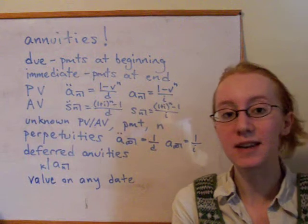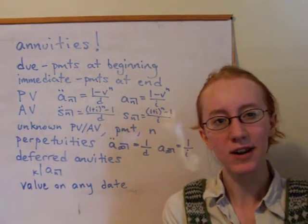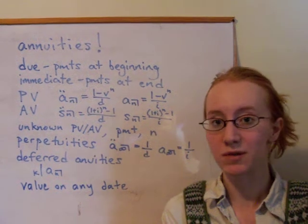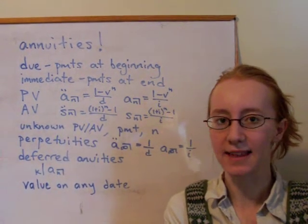So the notation that we use is a present value is an A symbol, and if there are two dots over it, it means it's an annuity due. So the payments are made at the beginning. If there are no dots, it means immediate, and the payments are made at the end.